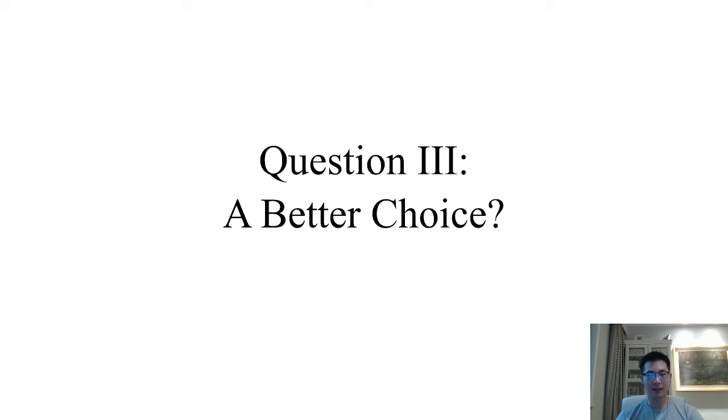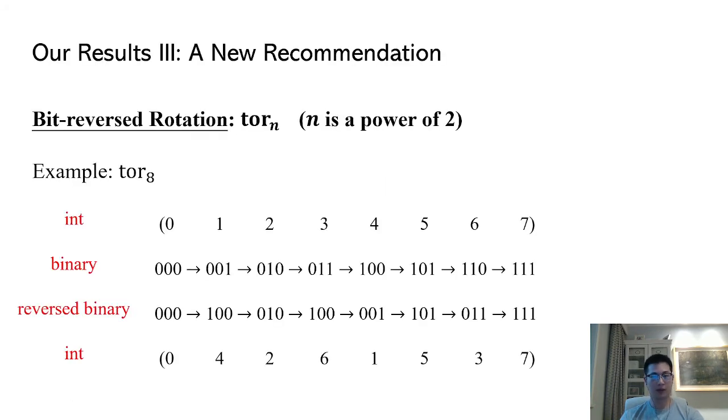Our analysis of the Calvary number of rotations extends immediately to any cyclic permutation. So can we find a better permutation to replace rotations? The answer is affirmative. We have constructed a permutation that we call bit-reversed rotation, Tor n, where n is the power of 2.